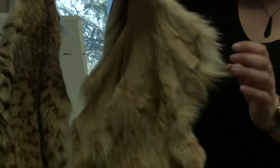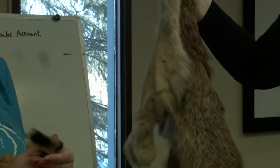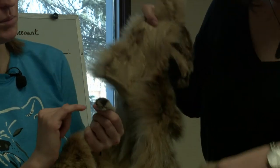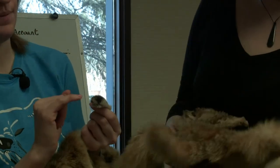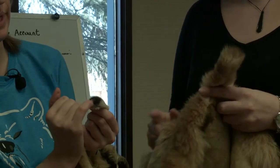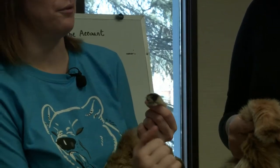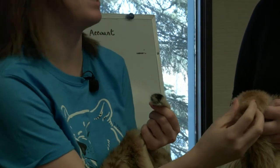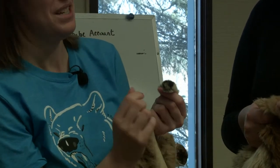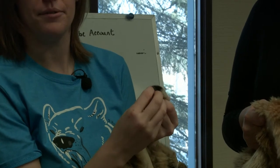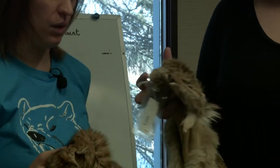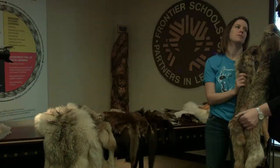The most identifiable feature for a bobcat is the tail tip — they will always have a half black, half white tip on their tail. For a lynx, it's a totally black tip on the tail. So bobcat: think half white, half black; lynx: totally black tip. There are a couple of differences between these two pelts — and they're so soft.